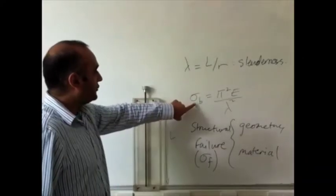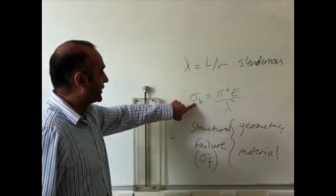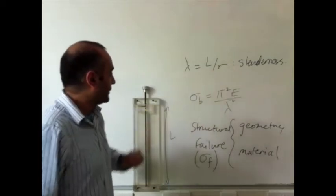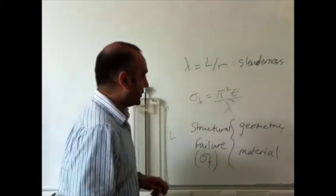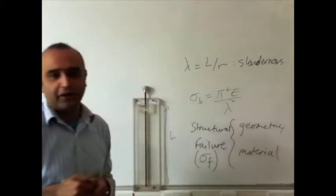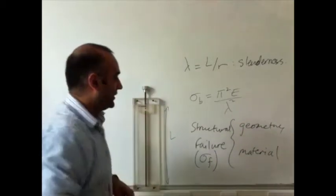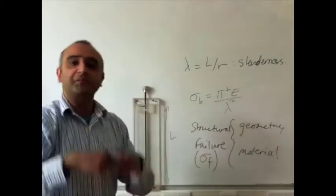So now we've defined the buckling stress, which is given by this formula here. This is primarily a geometric criterion. So structural failure, in fact, has two criteria. It has a geometric criterion, but it also has a material criterion.